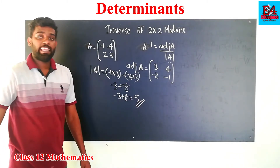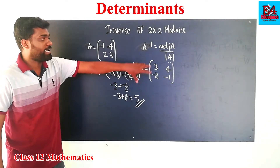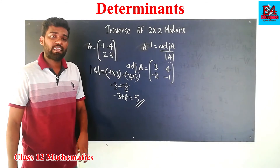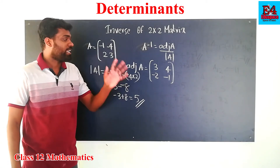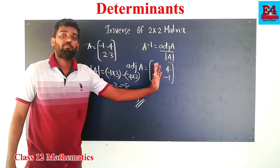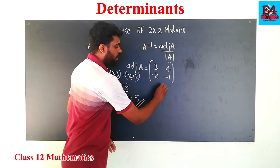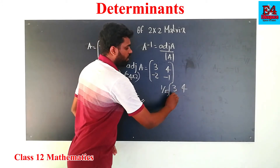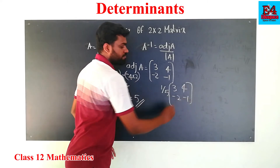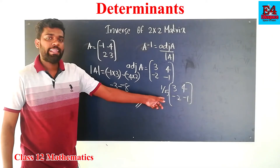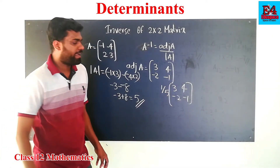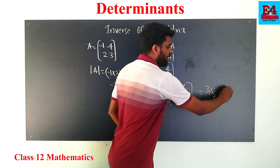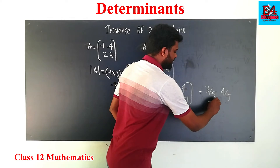Now we need to find the adjoint of A divided by the determinant. A inverse is equal to 1 by 5 into the adjoint matrix.